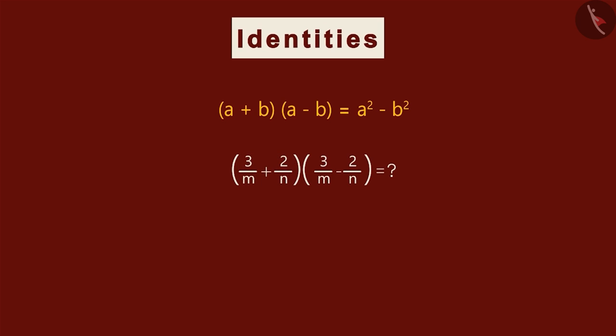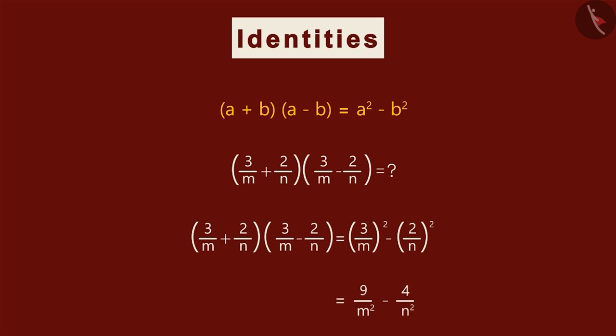We know that similar questions can be solved using this identity. So, by substituting the values of a and b, we get this. Simplifying it further, we get this as the final answer.